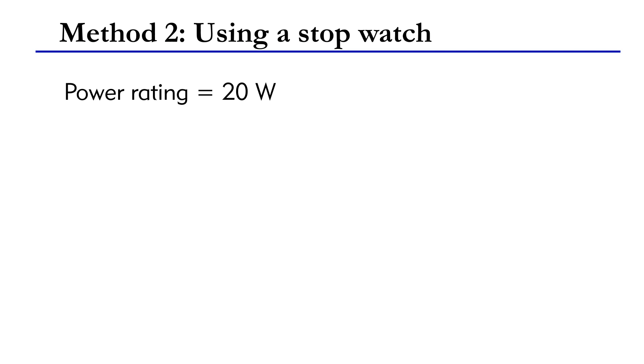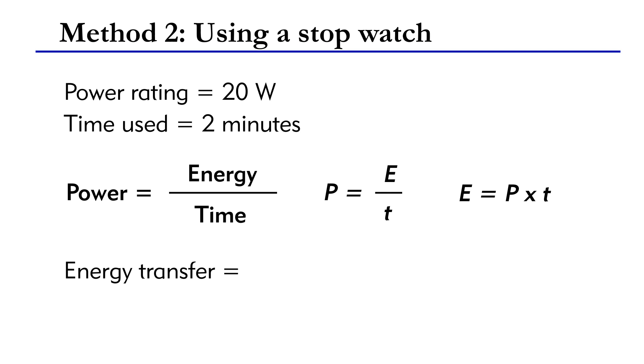Suppose the power of the heater is 20 watts, and the time recorded is 2 minutes. Since power P is equal to energy E divided by time T, the energy transfer E is equal to P times T. In this example, the energy transfer is 20 times 2 times 60, and the result is 2,400 joules. The reason why we multiply 60 is because we should always convert minutes into seconds.